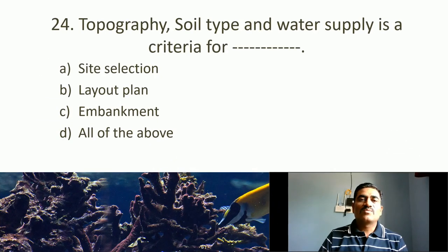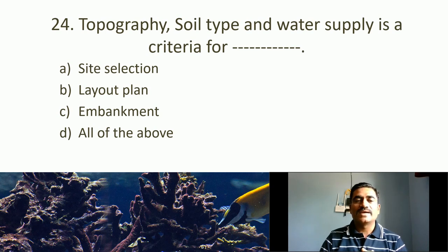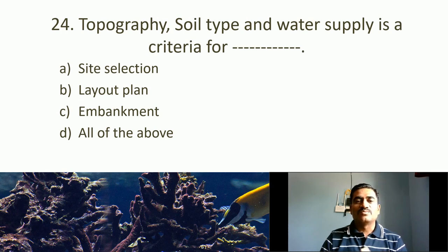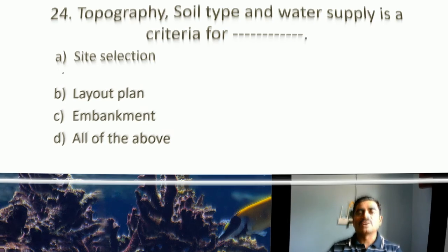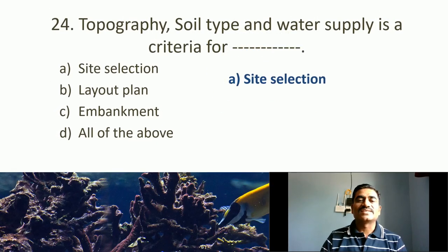Twenty-fourth MCQ: Topography, soil type, and water supply are criteria for what? Options: site selection, layout plan, embankment, all of the others. Topography is the undulation or external features of the land. Topography, soil type, and water supply are criteria for site selection for fish culture or pond construction. The correct answer is site selection.